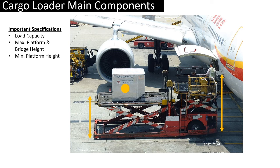Maximum platform height determines the largest aircraft type a cargo loader can service. Minimum platform height is also of importance — the rear scissor lift mechanism has to be designed as slim as possible to allow the platform to get as close to ground level as possible in the retracted position, minimizing the effort required for loading and unloading ULDs between the cargo loader and cargo dollies.